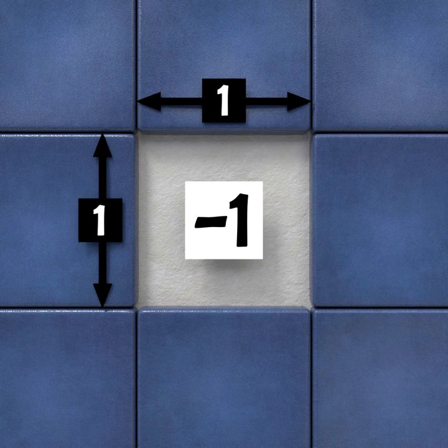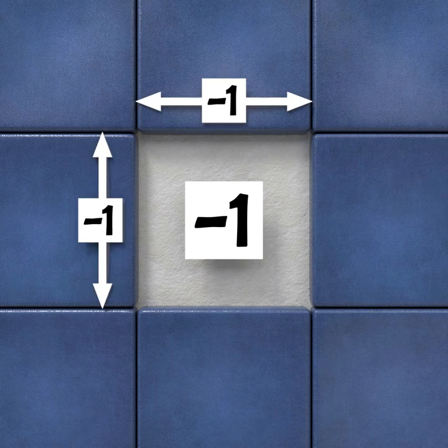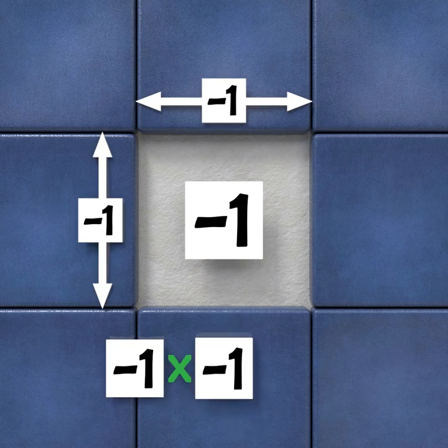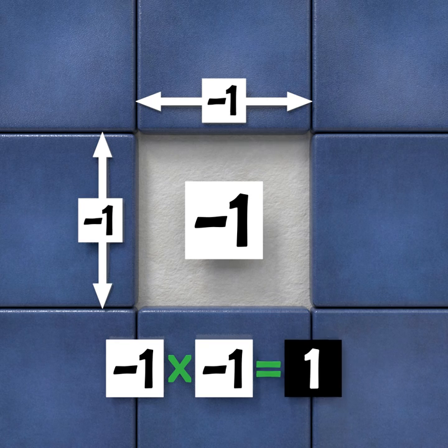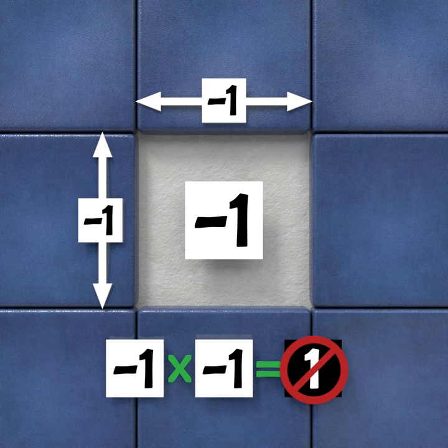If we considered the edges of the hole to be negative 1 unit in length, we'd end up with an area of negative 1 times negative 1, or negative 1 squared. A negative times a negative creates a positive value. So again, we'd get the wrong answer of positive 1.